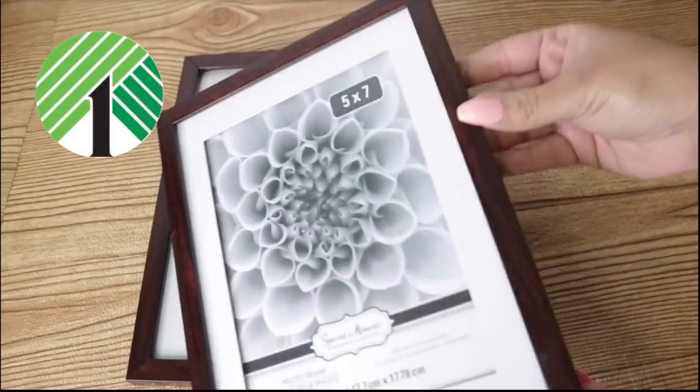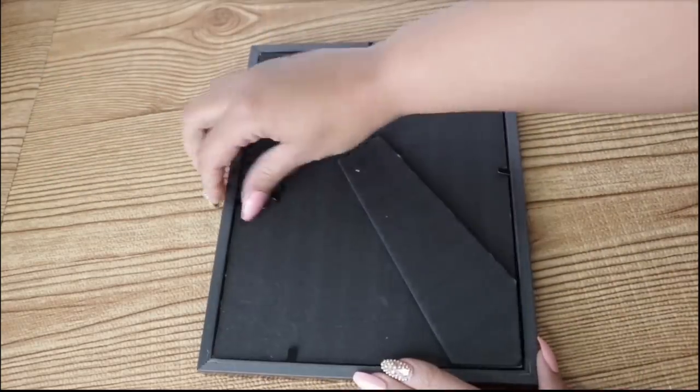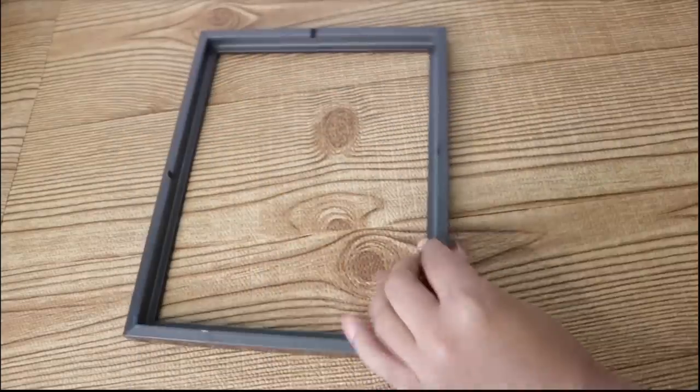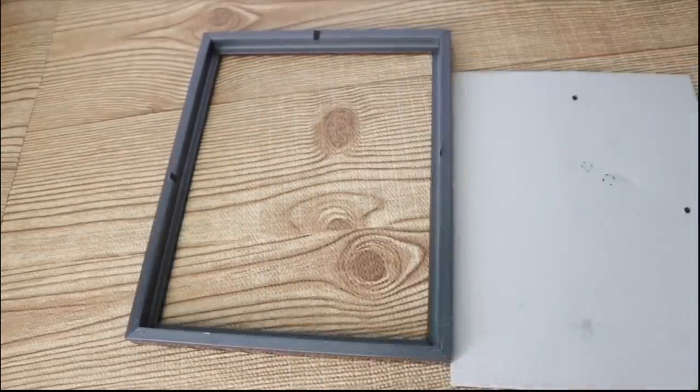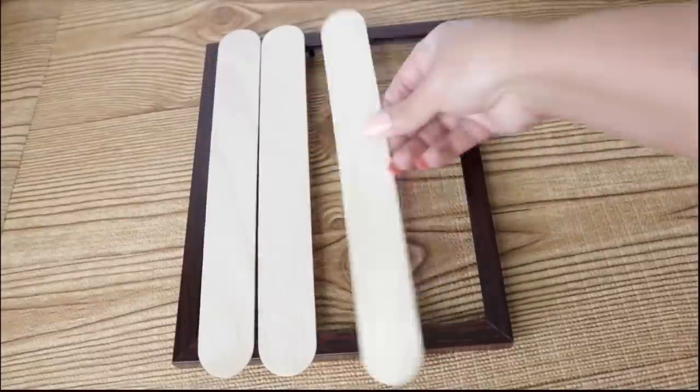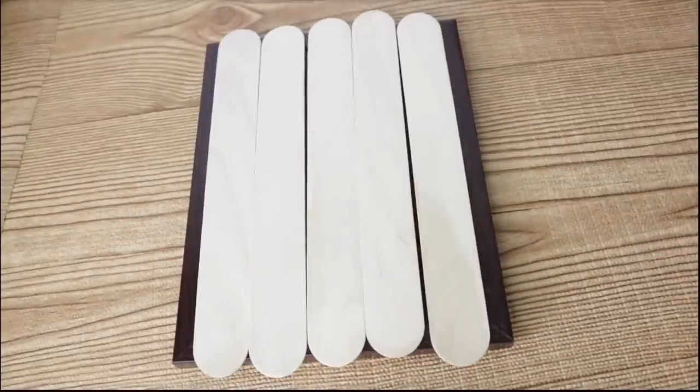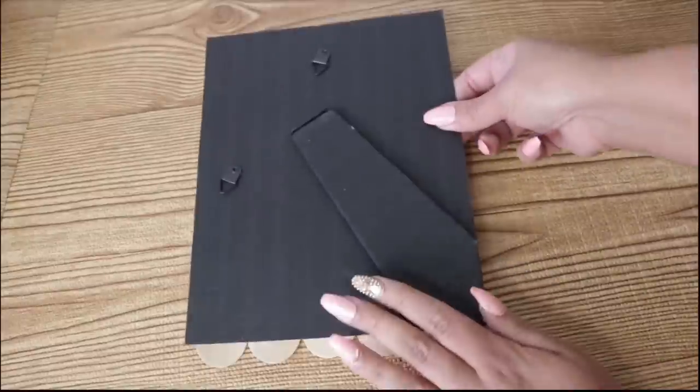For the first one, I'm starting with two picture frames from Dollar Tree. You're going to take this apart but please do not get rid of the backing. You can get rid of the glass if you want. I like to save them. I'm using jumbo popsicle sticks for this, but you can use the large Dollar Tree ones and just place them horizontally rather than vertically.